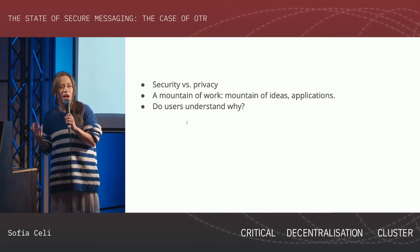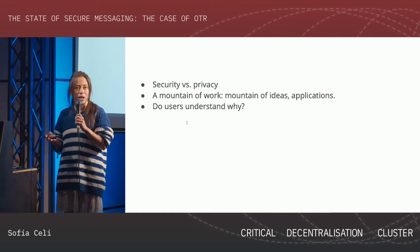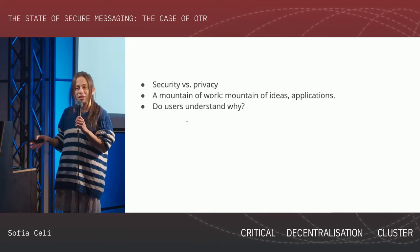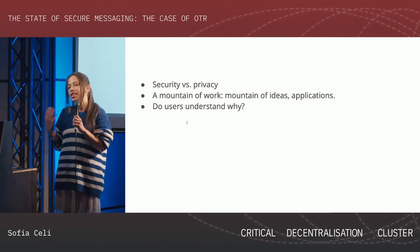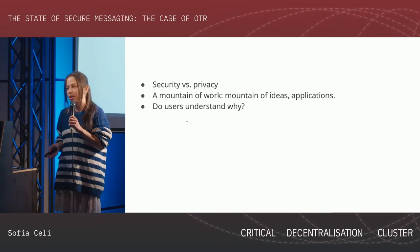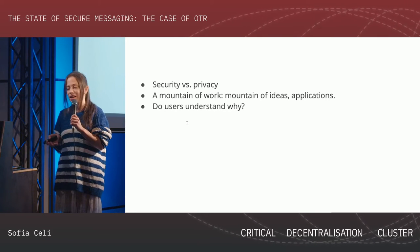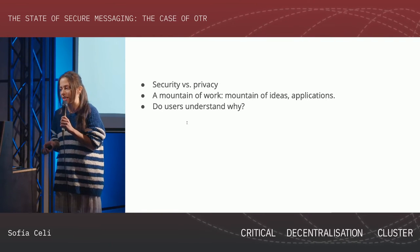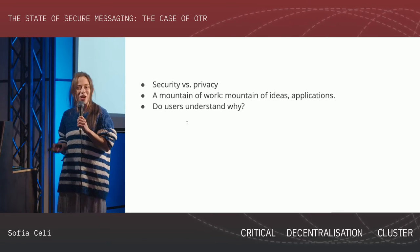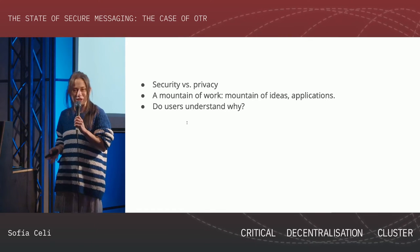What Rogaway also argues is that there has been some research and some applications of security properties, but not so many of privacy properties — in the sense that you have, for example, WhatsApp, which introduces end-to-end encryption, and that would be the security part of it. But there are not many applications that actually introduce privacy properties like anonymity or deniability. And he argues there's no such thing as security without these privacy properties.